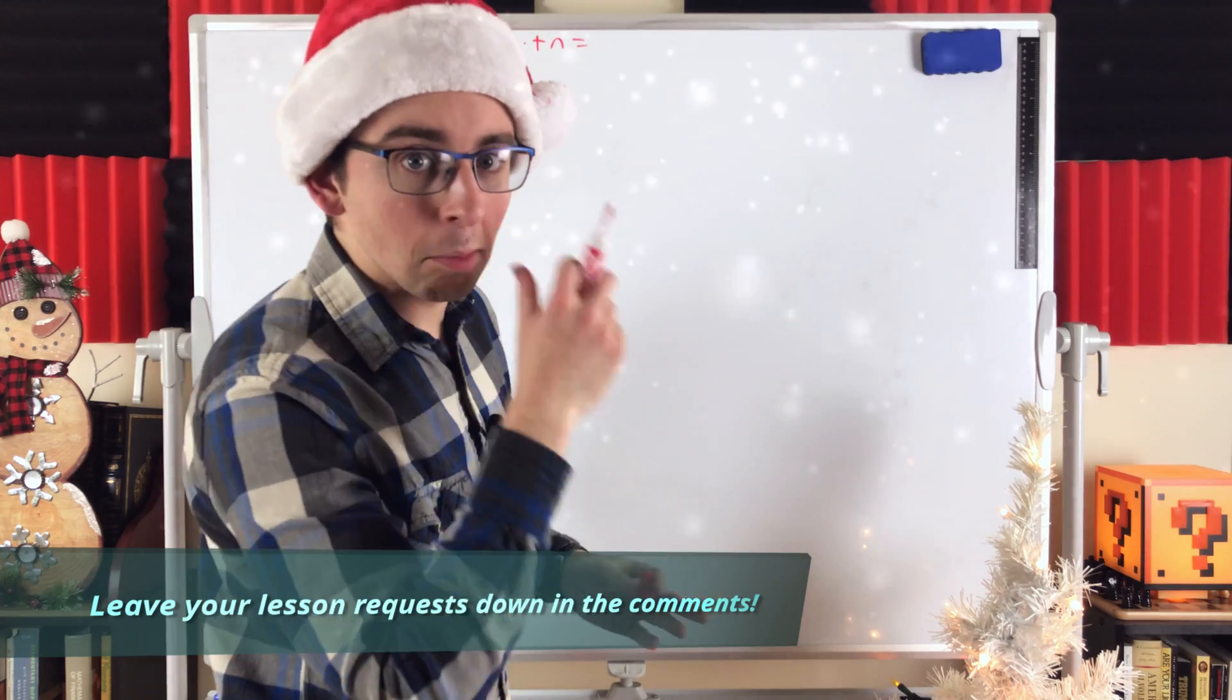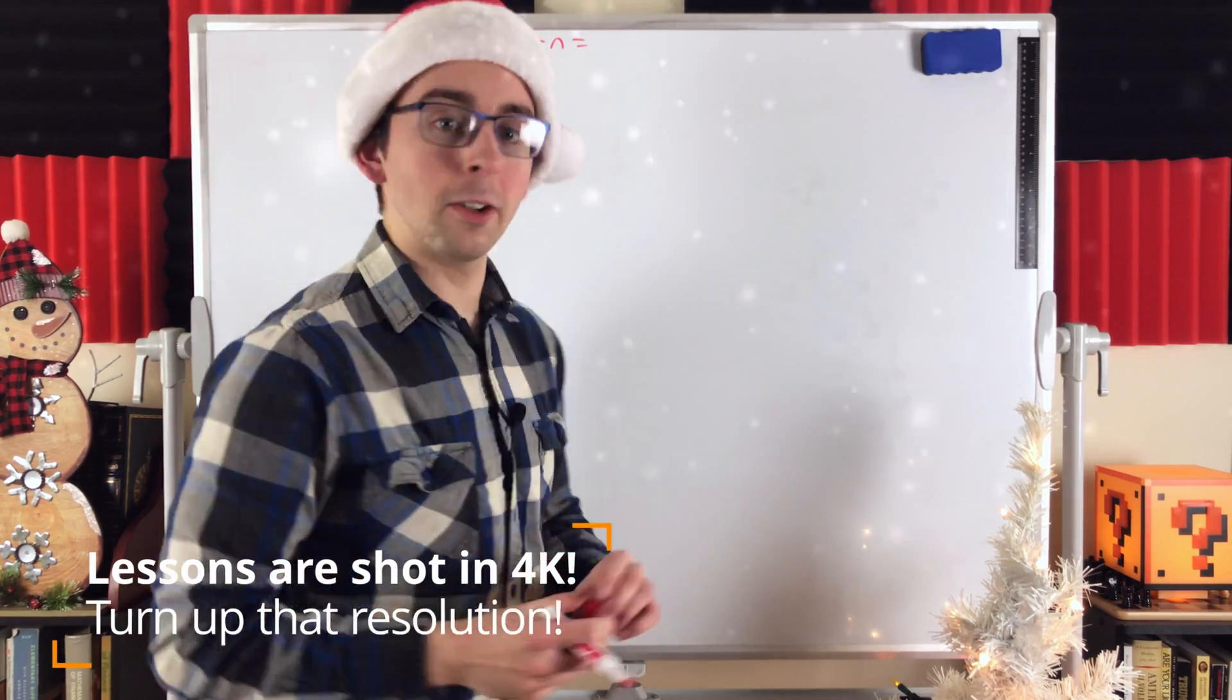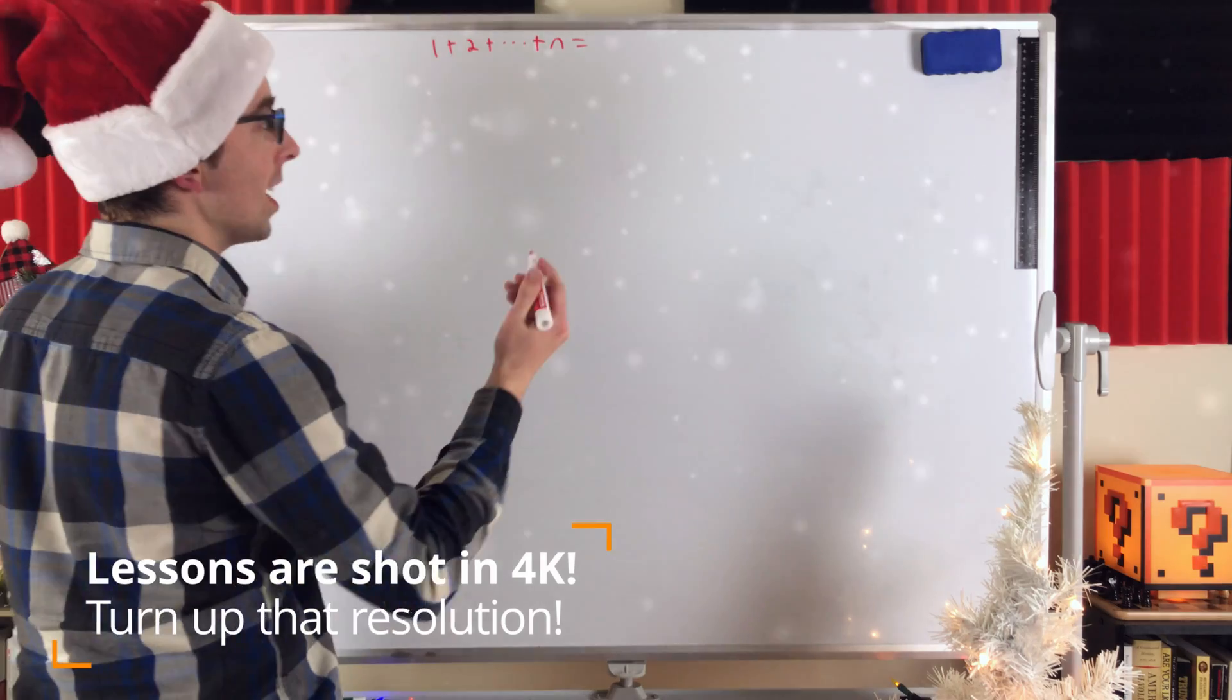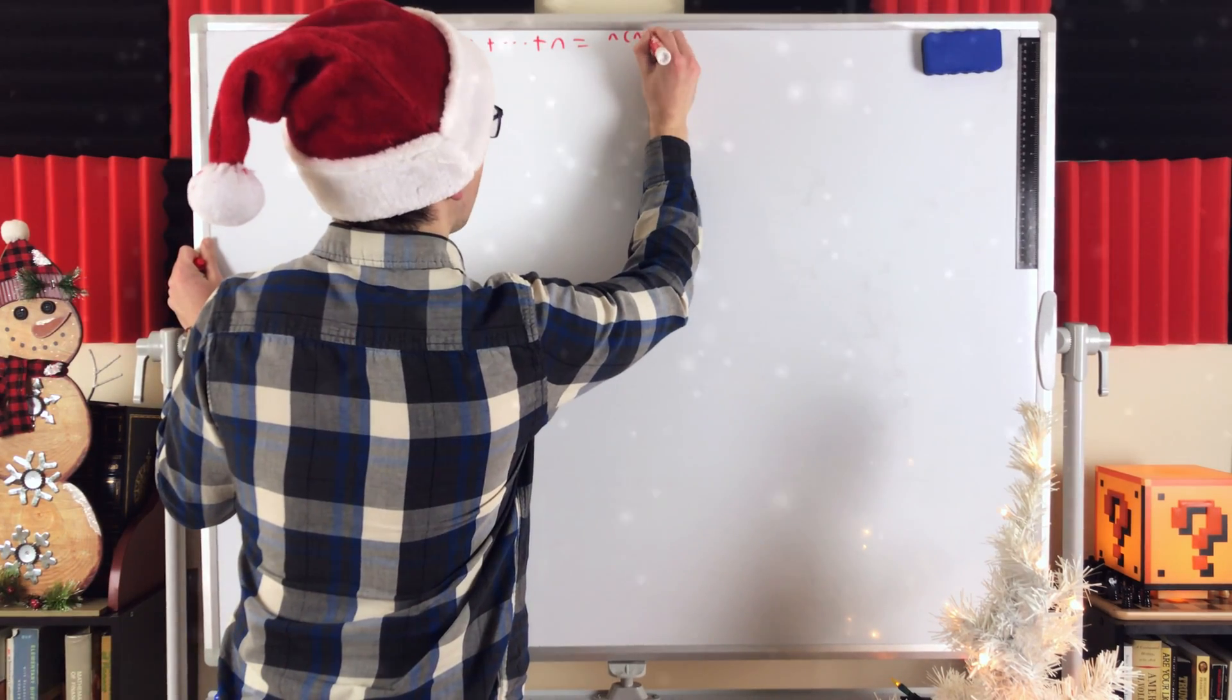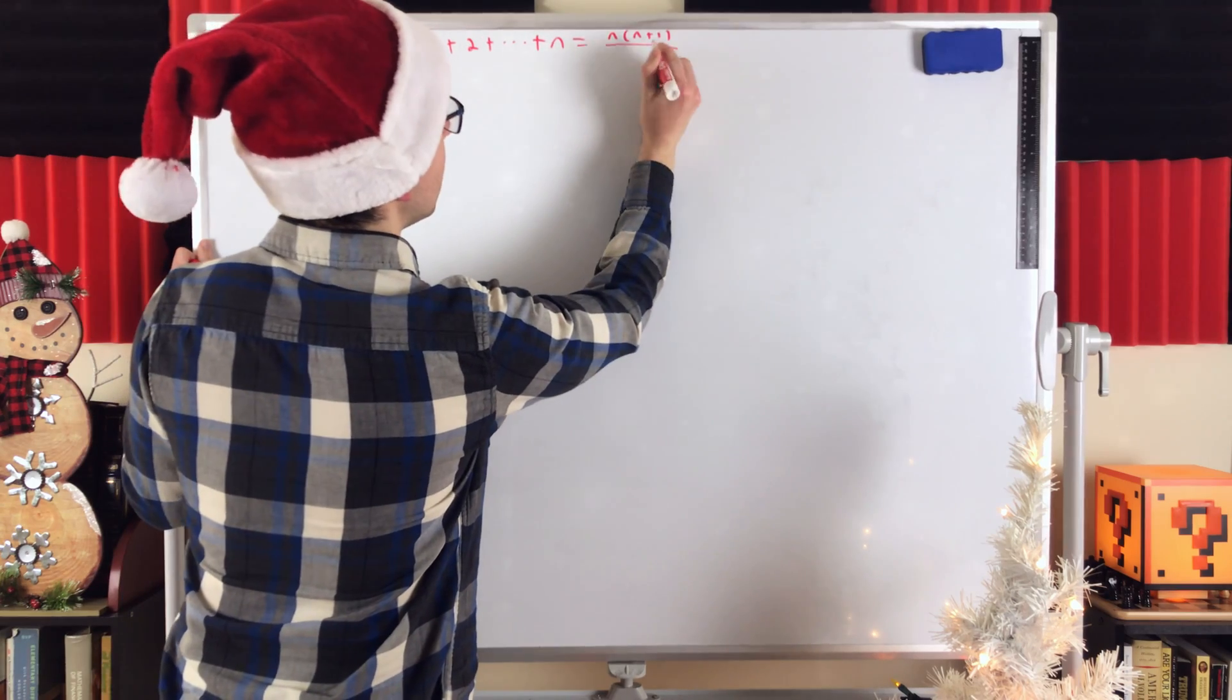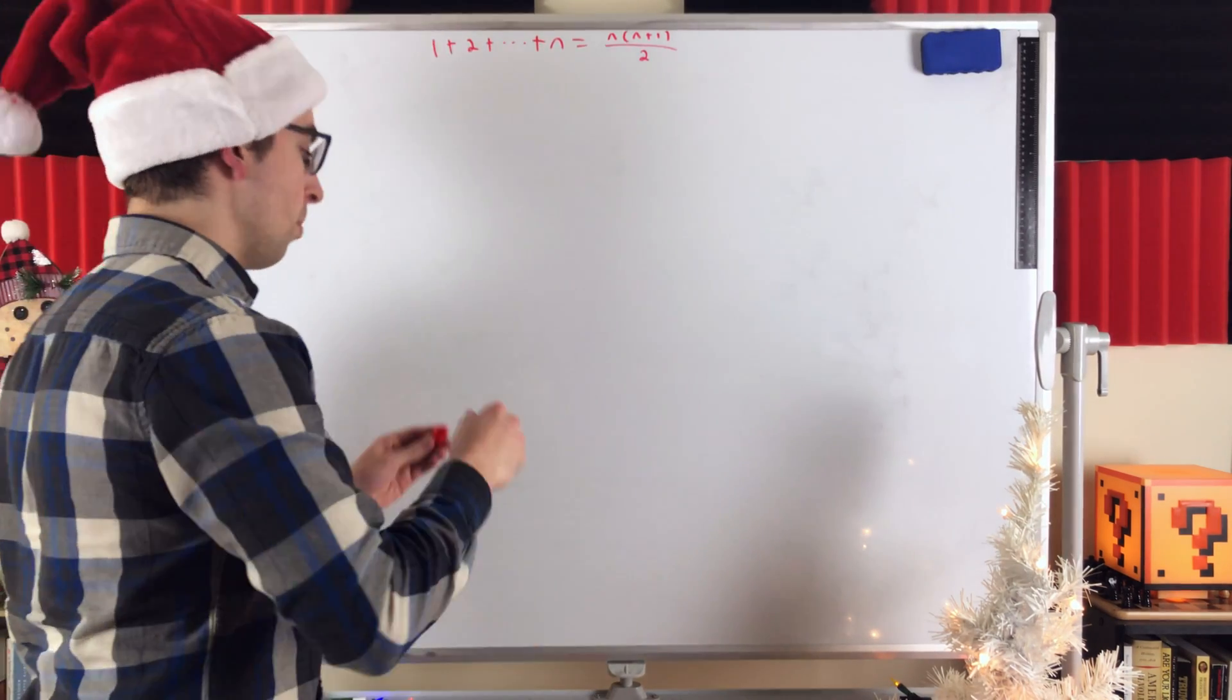It's a classic number theory problem, and the answer is a classic result. A lot of you are probably familiar with what this is equal to already. Big spoiler warning here. It's equal to n times the next counting number, n plus 1, divided by 2. Sorry if that's a little small, but don't want to take up too much room.